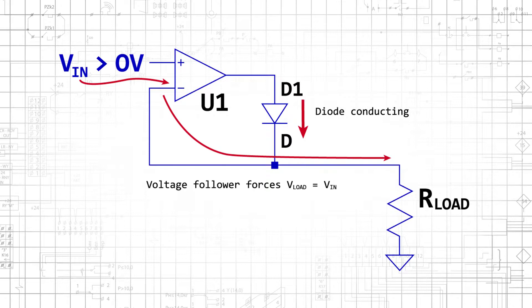This output voltage causes the diode to start conducting current, and the circuit becomes a voltage follower. Consequently, the op amp will adjust its output voltage in whatever way is necessary to make the load voltage equal to the input voltage.